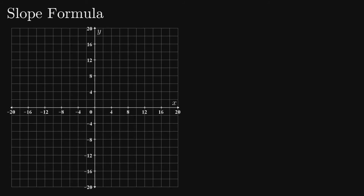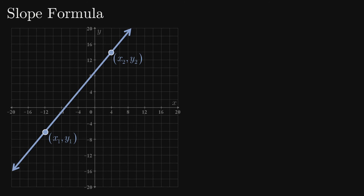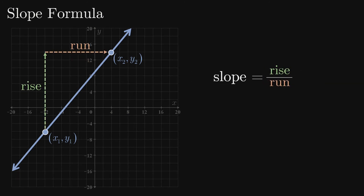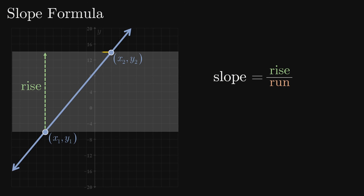There is a formula that is commonly used for calculating the slope of a line. Let's take a look at what it is and where it comes from. Suppose we have a line, and on that line we have two points, x1y1 and x2y2. We know that the slope is the rise divided by the run for any two points on the line. The rise is simply the difference in the y values of the two points, that is, y2 minus y1.